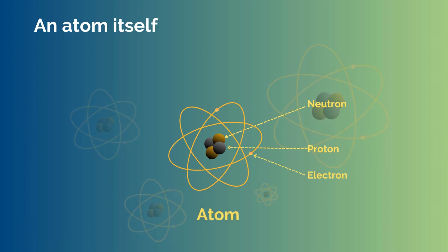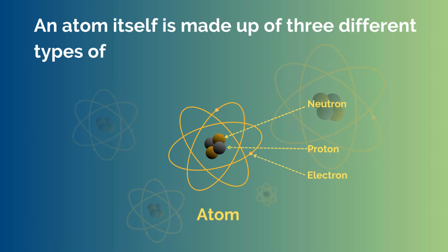An atom itself is made up of three different types of particles called electron, proton, and neutron.